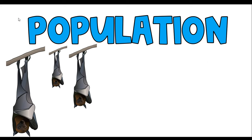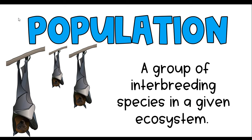The next level is a population, defined as a group of interbreeding species in a given ecosystem. In this example, I'm showing you three bats — all of the bats that live in this ecosystem. It's got to be a defined area, so the bats that live in the rainforest in South America are in a different population than the bats in your hometown. It could be all the deer in a nearby forest, all the fish in a pond, or all the grasshoppers in your backyard area.